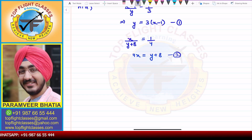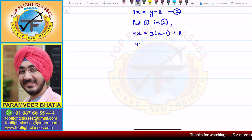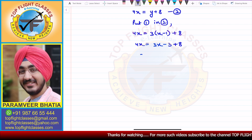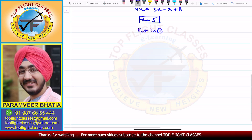We can substitute y from equation one into equation two. Substituting, we get 4x equals 3(x minus 1) plus 8. Expanding: 4x equals 3x minus 3 plus 8, which gives us x equals 5.